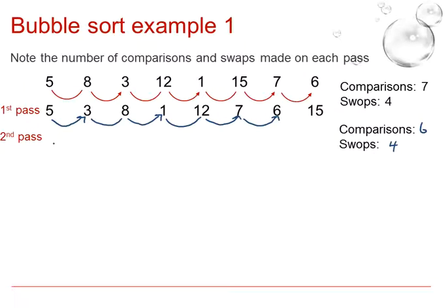At the end of the second pass, we will now have 3, 5, 1, 8, 7, 6, 12 and 15. You will note that the 15 was not looked at in this case and now we will have 2 numbers at the end, the 12 and the 15 which will not be looked at because they in effect have bubbled along to the end of the row for the ascending order.